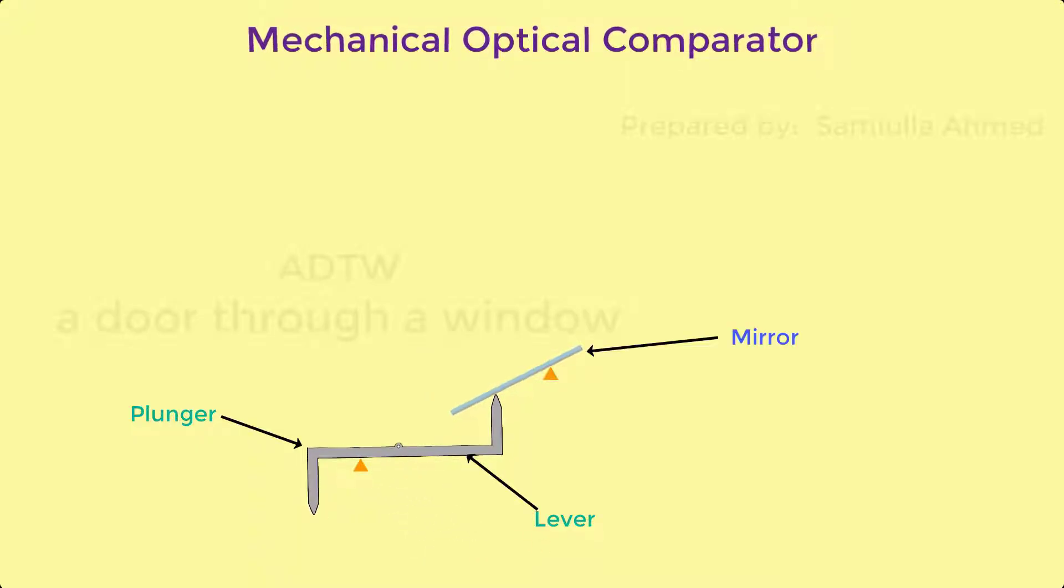The mechanical system causes a plane reflector to tilt about its pivot. The plunger is spring-loaded such that it is biased to exert a downward force on the work part. This bias also enables both positive and negative readings depending on whether the plunger is moving up or down.